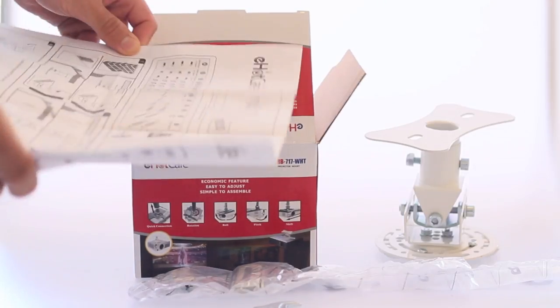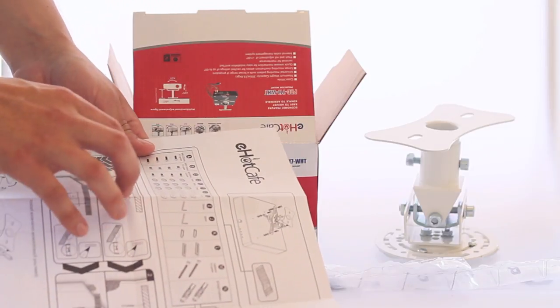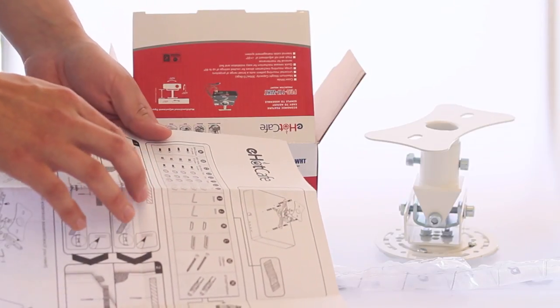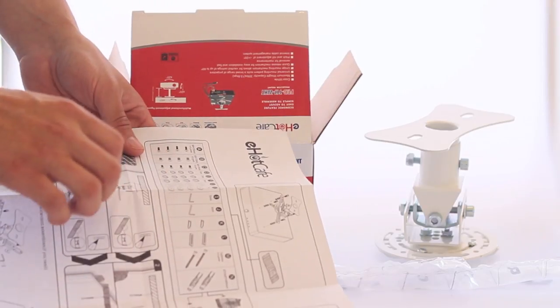This box comes with instructions. There are three sets of different screws or bolts, four sets of spacers, and it comes with the Allen wrench.